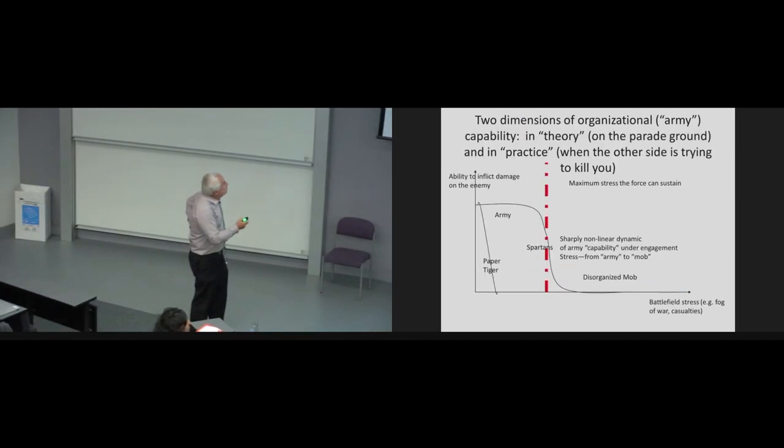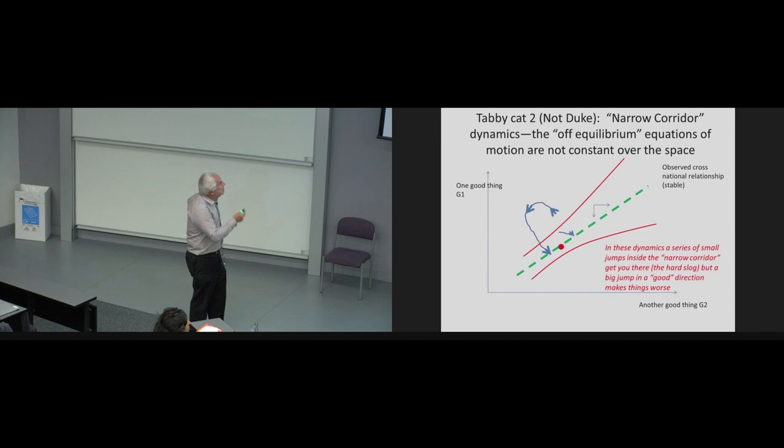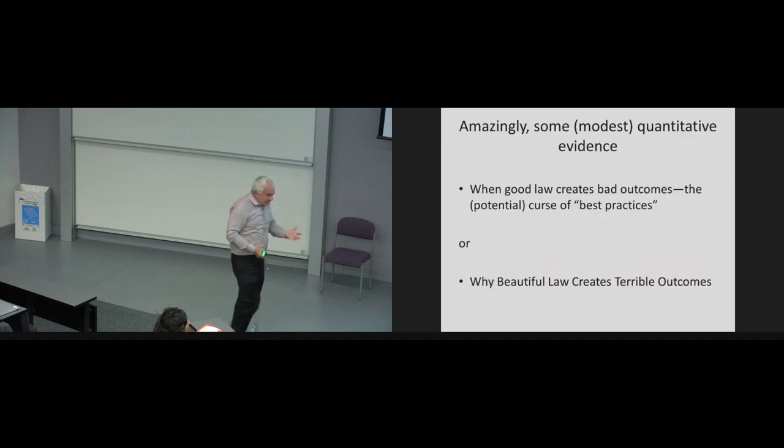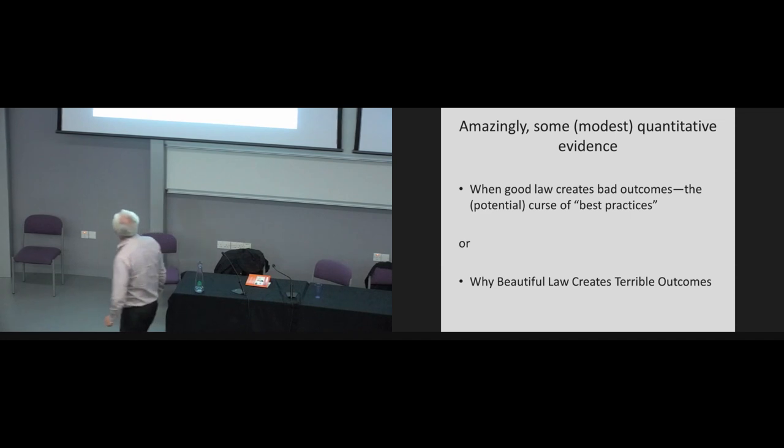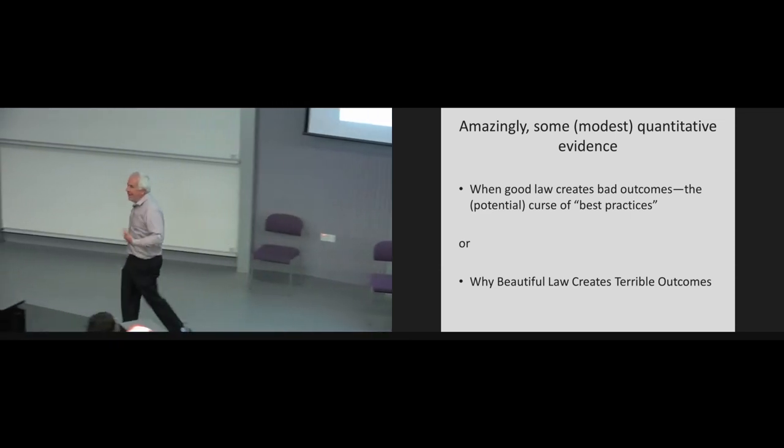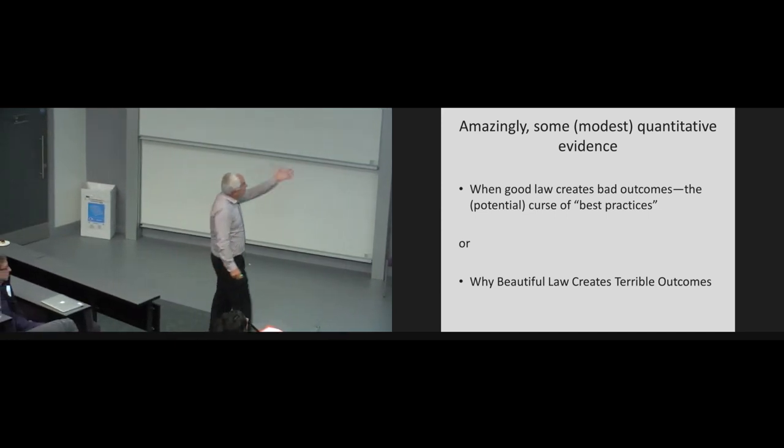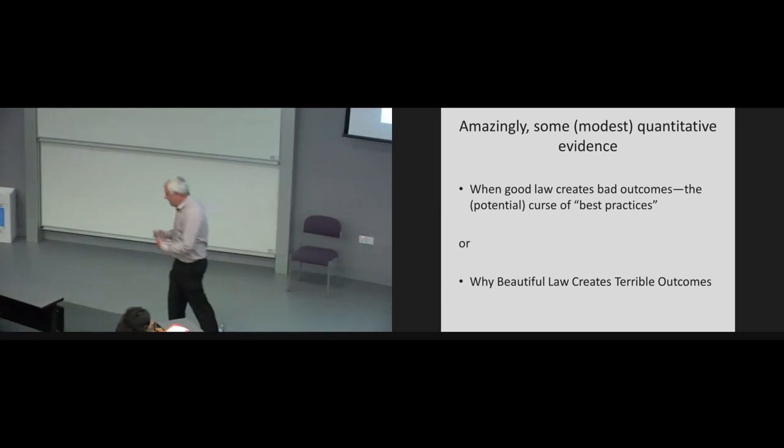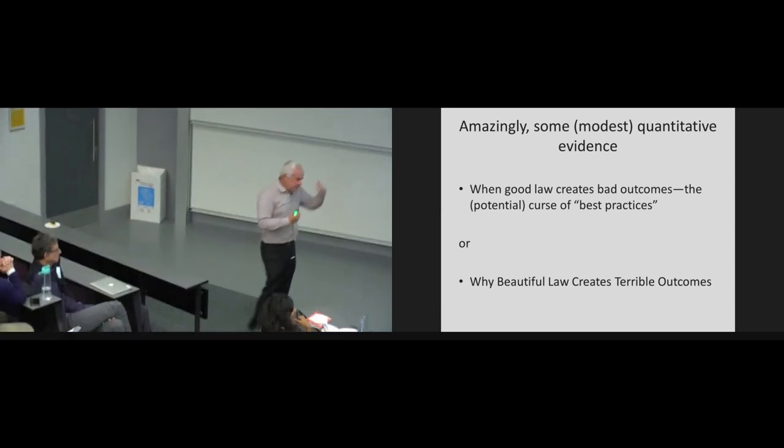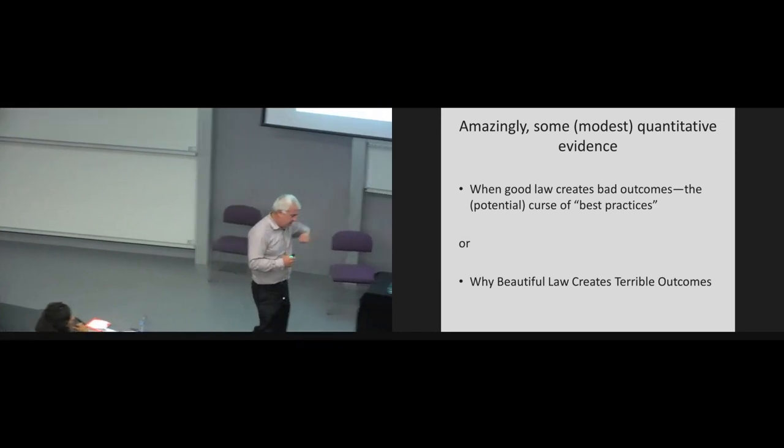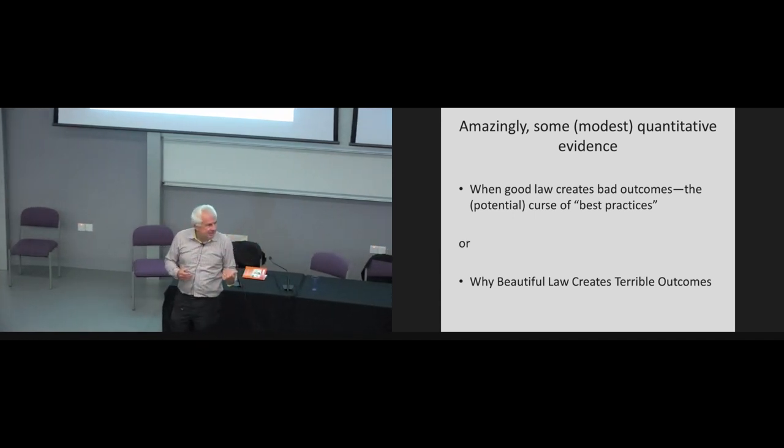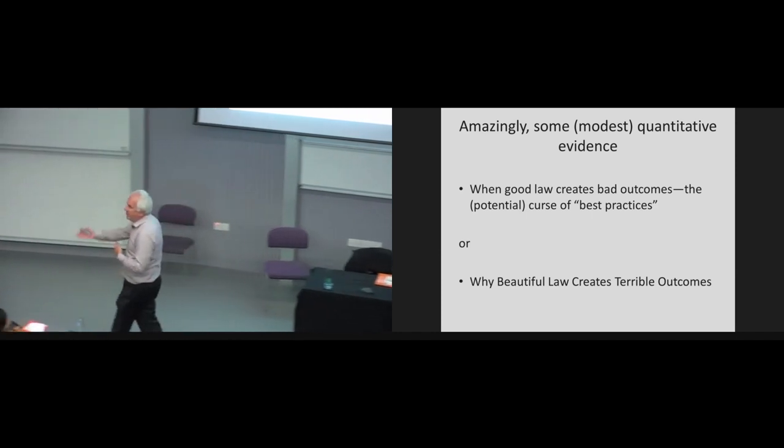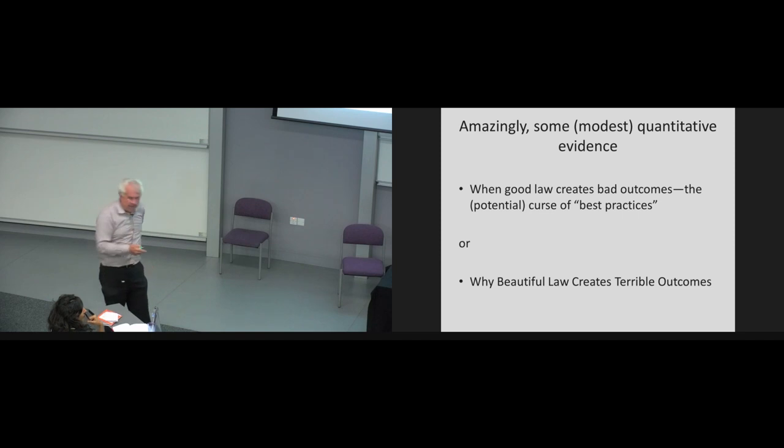So let me - amazingly, we have some modest quantitative evidence that suggests that this might be true, and that good law actually creates bad outcomes. Or we might call this why beautiful law creates terrible outcomes, in which we can actually show that creating a law that would be more restrictive actually creates less compliance by undermining the ability to implement.